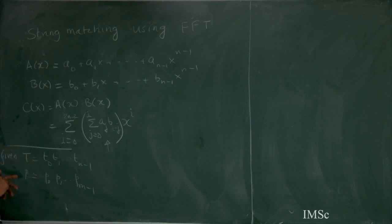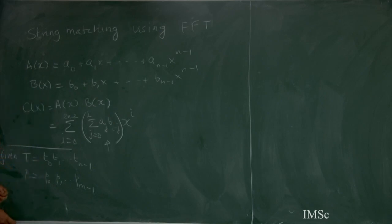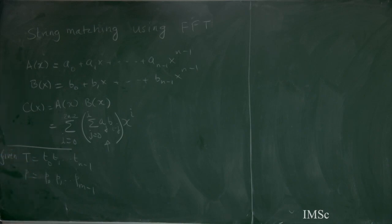If the text is given in advance, we can preprocess it and build a suffix tree, so that for every pattern we can find all occurrences in time proportional to the length of the pattern plus the number of occurrences. We have seen all three cases. Now we are going to come back to the same problem using an algebraic approach. The running time will be slightly worse, but for some more general problems this approach yields good algorithms.